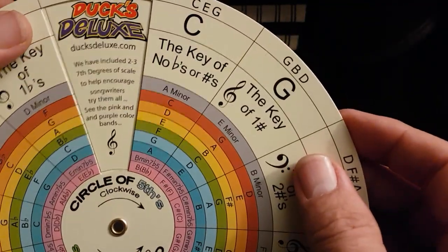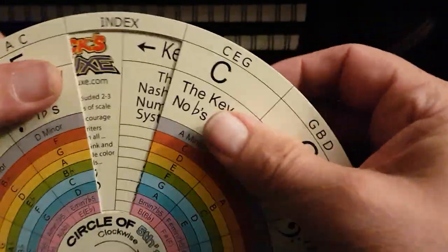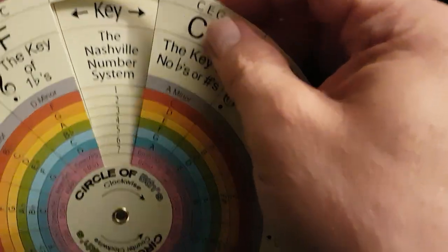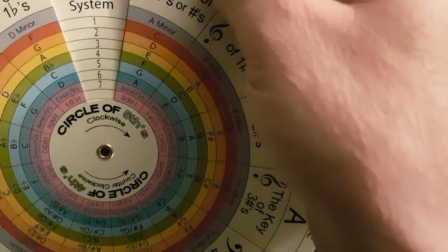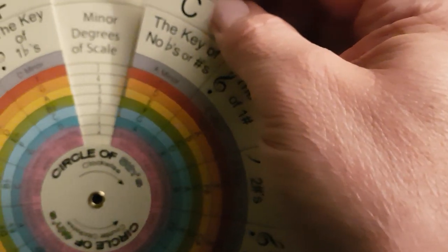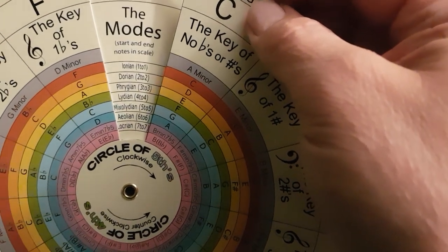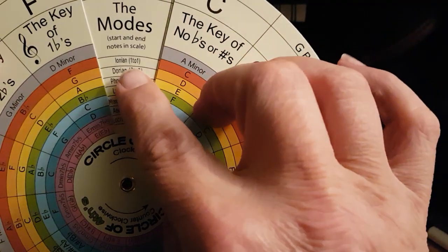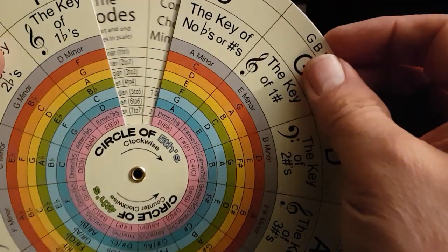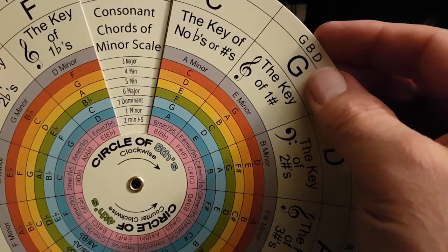Look at this, the Nashville number system, minor degrees of scales and the modes: the Ionian, Dorian, Phrygian, Lydian, Mixolydian, et cetera, and consonant chords of the minor scale.